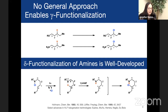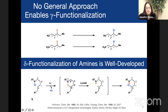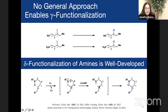When we started thinking about gamma functionalization, we had this idea that you effectively want to take technologies that are out there and shift them one position over. We were aware of a resurgence of interest in the Hoffman-Loffler-Freitag reaction — a reaction that's been around for 136 years — where you take a precursor to a nitrogen-centered radical, in this case an N-chlorinated compound, activate it with light to generate a nitrogen-centered radical. That radical goes through a six-membered ring transition state, carrying out CH abstraction and forming a carbon-centered radical, which then traps a chlorine atom from the starting material.